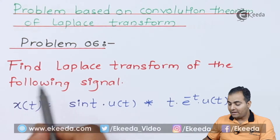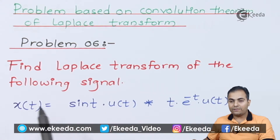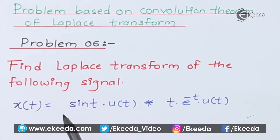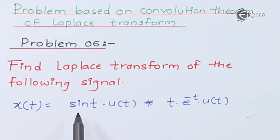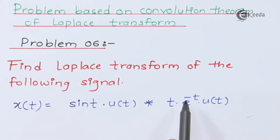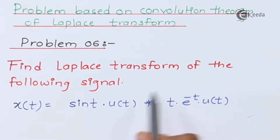Find the Laplace transform of the following signal, where the signal x(t) is a convolution between two different functions. The first function is sin(t)·u(t) and the second function is t·e^(-t)·u(t).